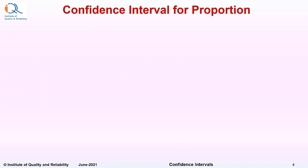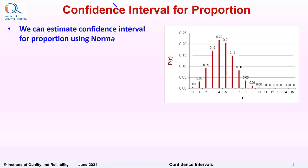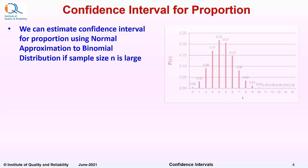Let us now discuss confidence interval for population proportion. We can estimate confidence interval for proportion using normal approximation to binomial distribution if the sample size n is sufficiently large.